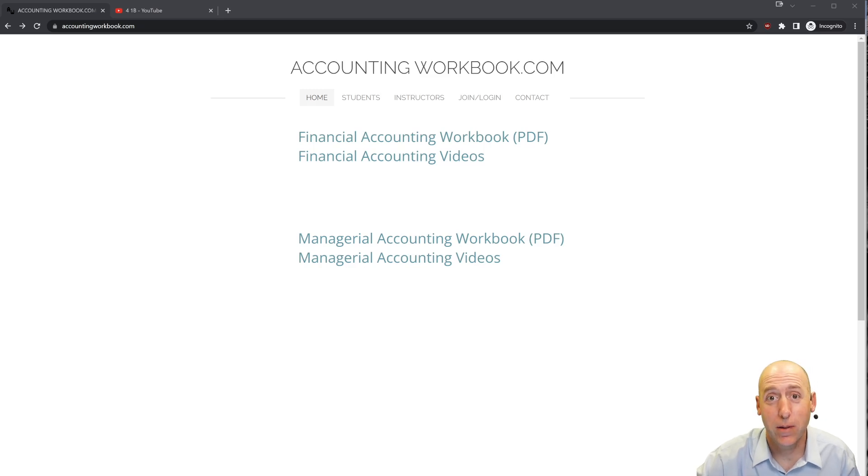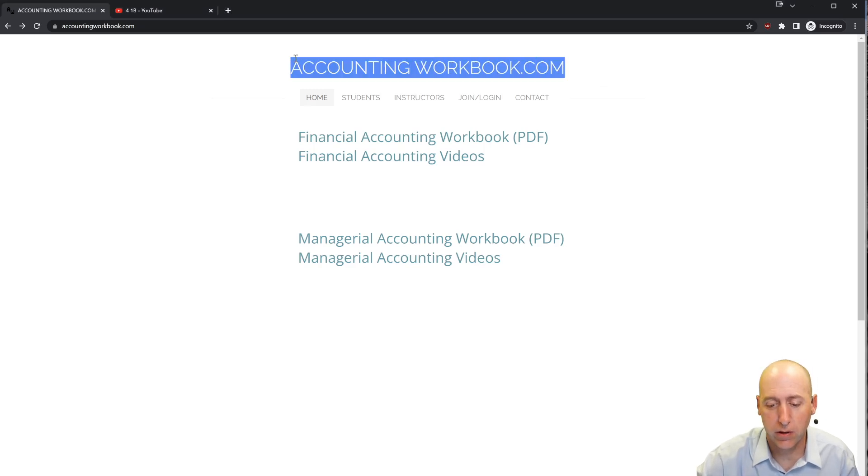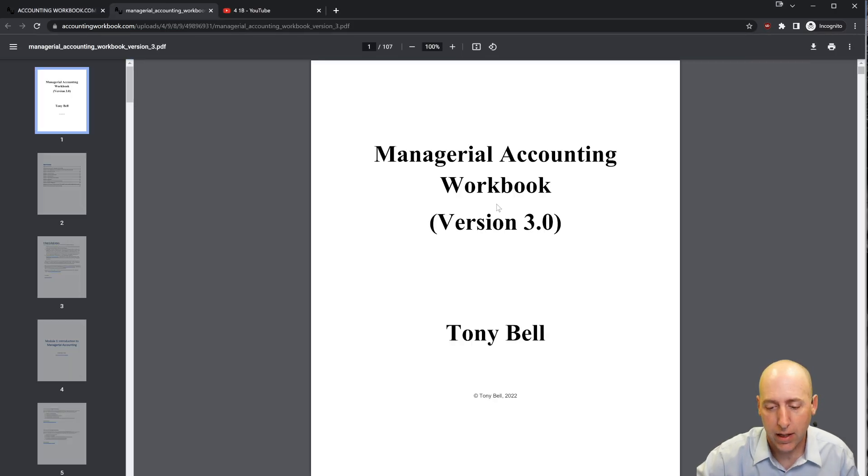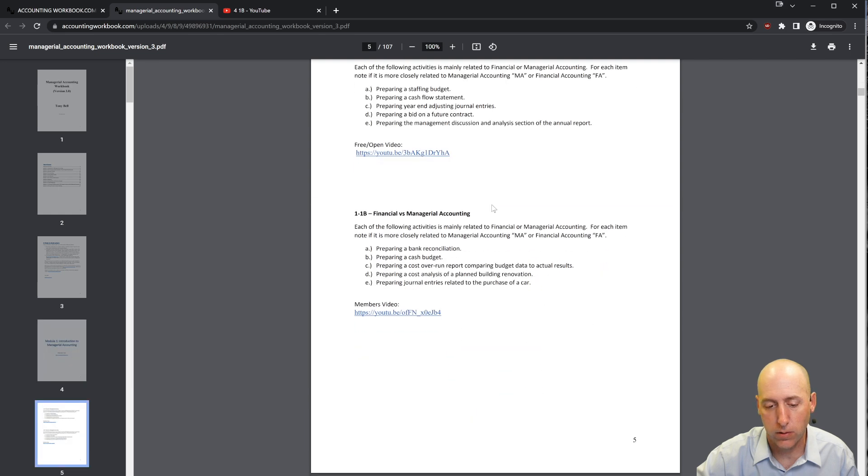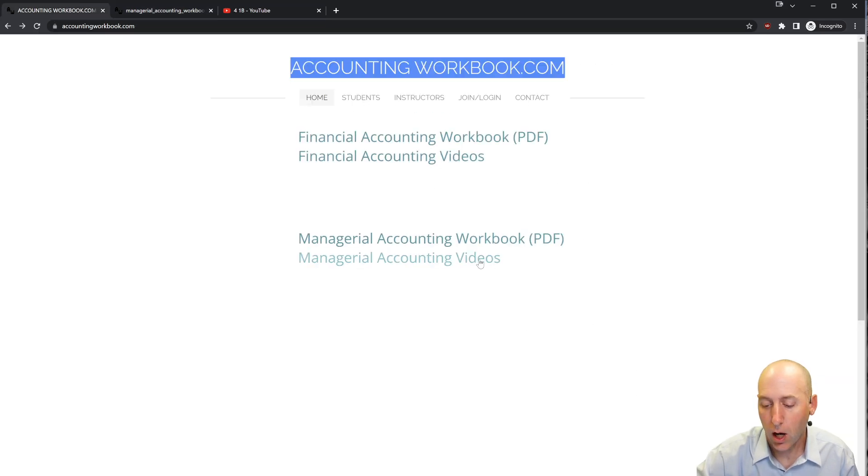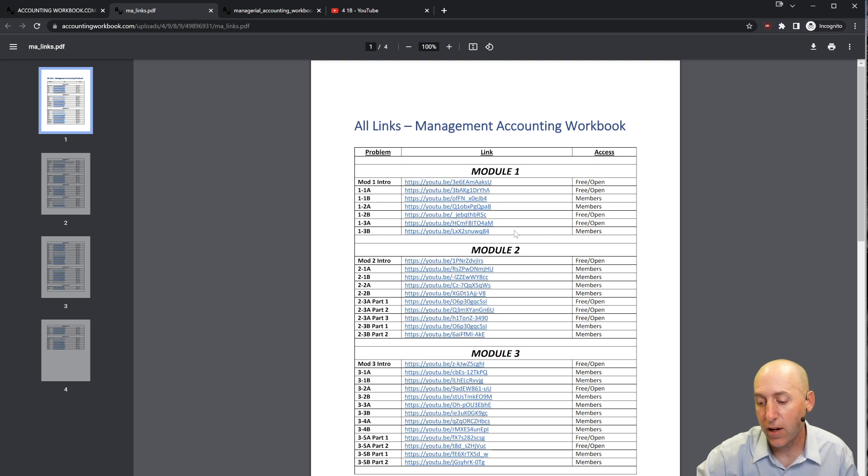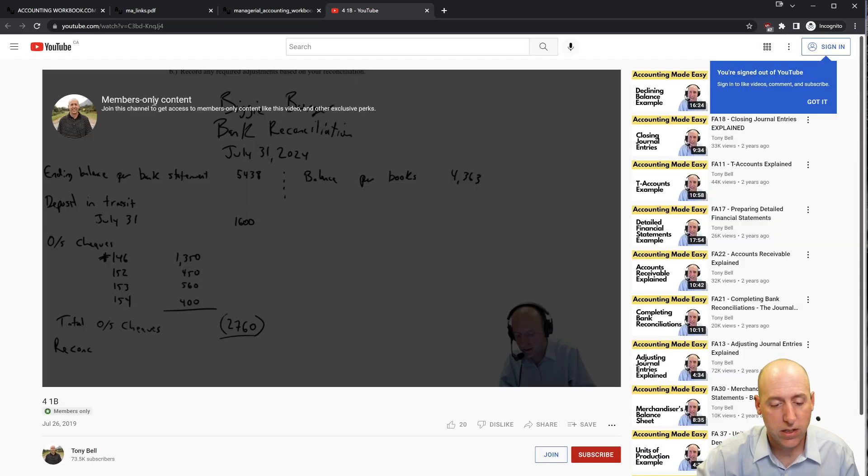All of the problems I work through in my videos can be downloaded from accountingworkbook.com. If you'd like a copy for yourself, just click the PDF link and you can download a copy to your computer. Also found on the website are links to all of my accounting videos, not just the ones here on YouTube that are publicly listed, but also members-only videos. About 40% of my videos are free and open, the other 60% are for members. If you click one of the members links, it'll take you to a page that says members-only content. If you'd like access to that content, just hit the join button.